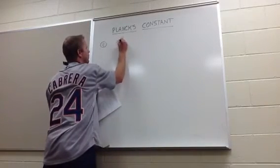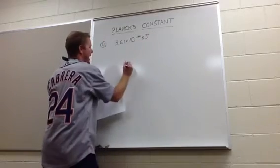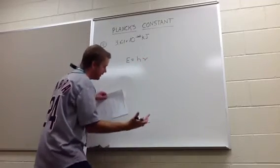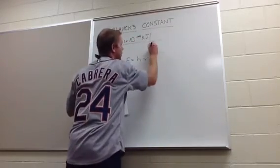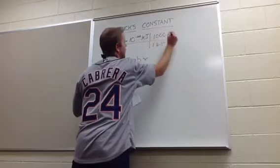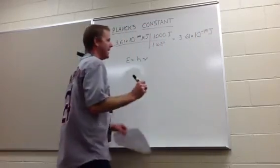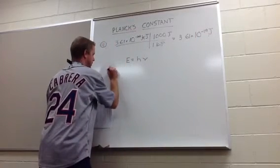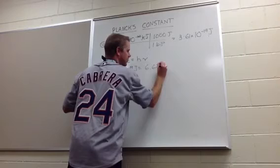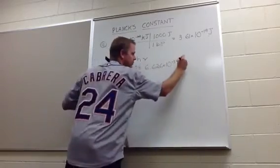First I've got to take 3.61 times 10 to the negative 22nd kilojoules and turn it into joules. Why? Because E equals HV — if you look at Planck's constant, it's joule-seconds, not kilojoule-seconds. So you've got to convert. In one kilojoule there are 1,000 joules. Kilojoules cancel, leaving 3.61 times 10 to the negative 19th joules. You need joules here to match Planck's constant so they can cancel each other out.